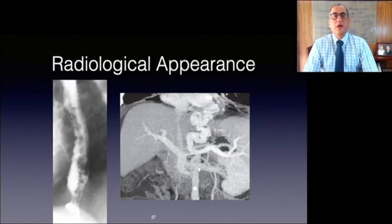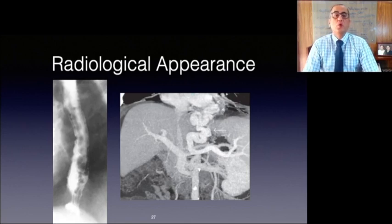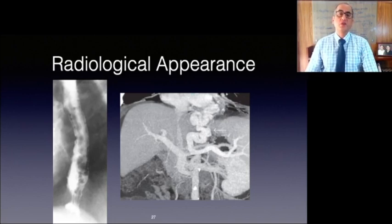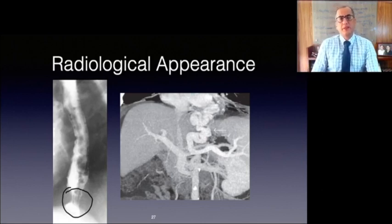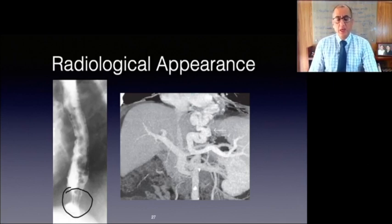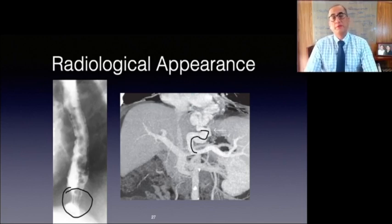Here we can see the uphill esophageal varices. This barium swallow demonstrates multiple serpiginous filling defects primarily involving the lower one-third of the esophagus with striking prominence around the gastroesophageal junction — the patient had cirrhosis secondary to alcohol abuse. A coronal MIP CECT image shows a dilated left gastric vein serving as an efferent vessel for multiple paraesophageal varices.